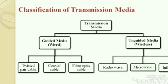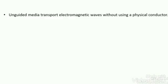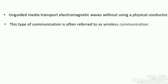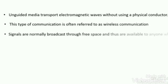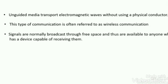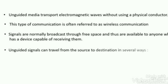In this tutorial we are going to learn about unguided transmission media. In the last class we discussed guided media; here we are going to see unguided media and its categories. Unguided media transports electromagnetic waves without using any physical conductor, which means without any physical link it can send data from source to destination. In this medium, signals are radiated through the air, and in some cases can also transmit through water.